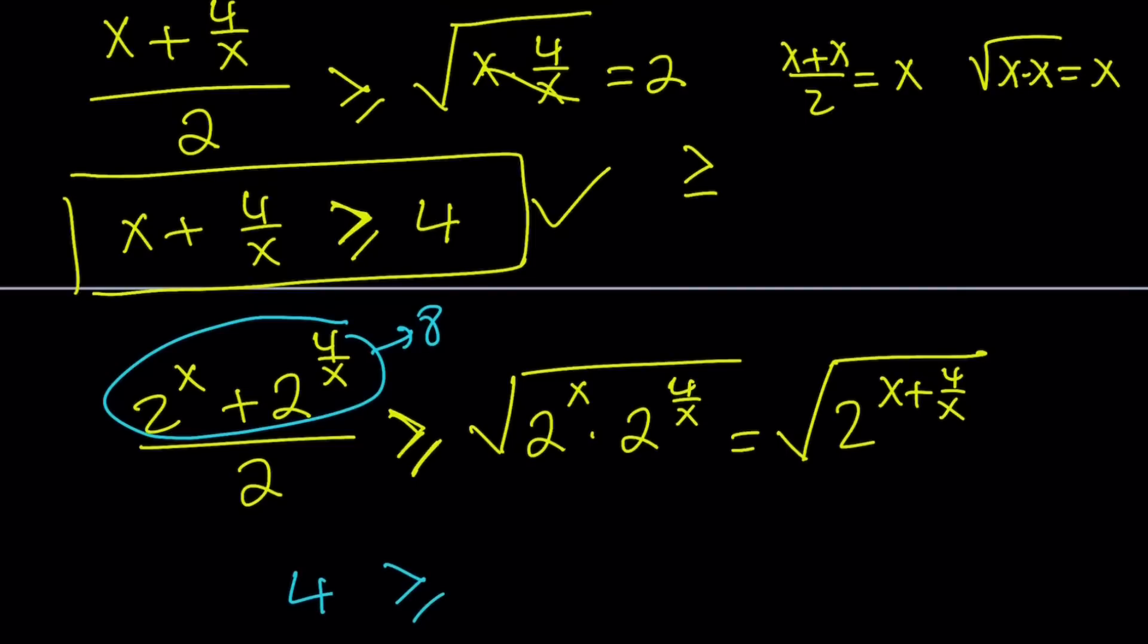Now, we do know that this is true. x plus 4 over x is greater than or equal to 4. So what can I write about this? I can basically say, do 2 to the power of both sides. And then this is also going to be true because 2 is greater than 1.